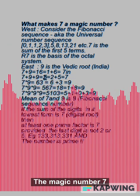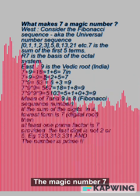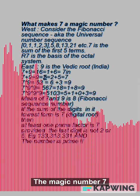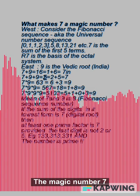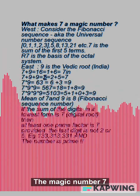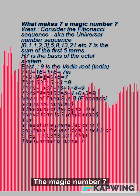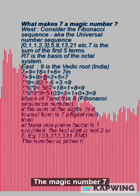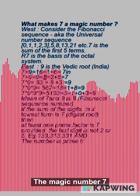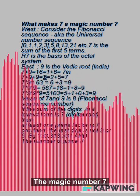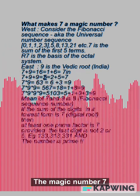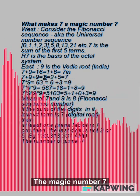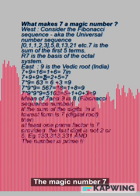For a Fibonacci sequence number, if the sum of the digits in its lowest form is 7 — the digital root — then at least one prime factor is 7, provided the last digit is not 2 or 5. Example: 3,313,331, and the number is prime.